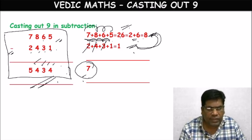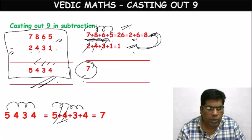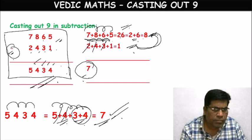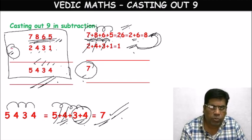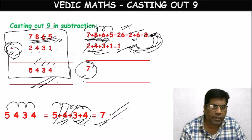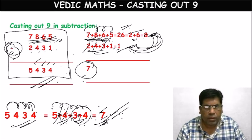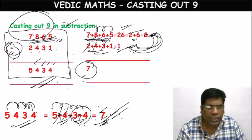As we are doing subtraction, we compute 8 minus 1 equals 7. Now check the result 5434: 5+4+3+4 — 5+4=9, cast it out. Remaining: 3+4=7. Answer is 7. Both match, so the answer is correct. Note: though we are doing subtraction for the operation, when finding individual digit sums within each number, we always use addition only. We use subtraction only when combining the condensed single digit values.